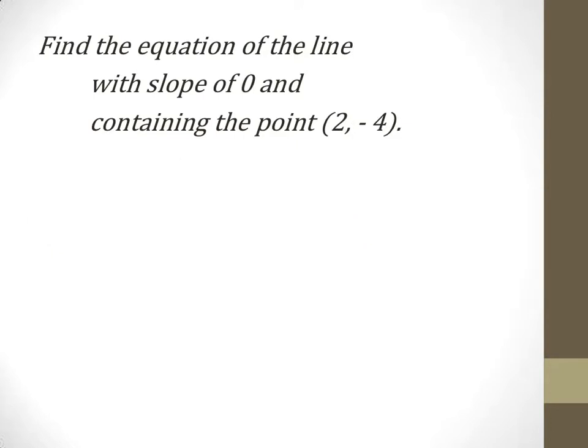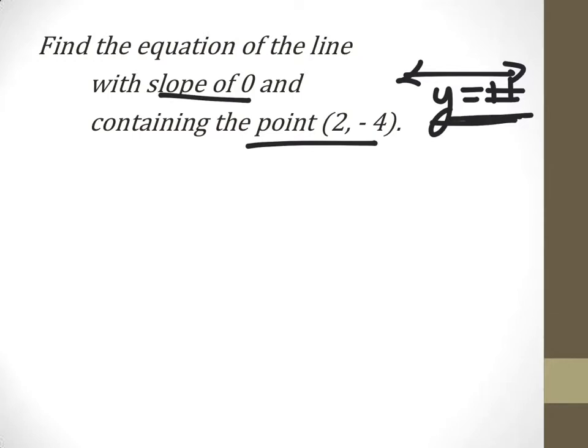Sometimes they give us a slope of 0. And we know slope of 0, those lines are horizontal. Lines that are horizontal look like this, that's y equals some number. Well, if this point is on that line, its y value has to be the same as every other y value. So that means that y equals negative 4, and that's our equation.